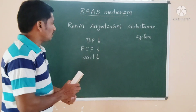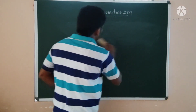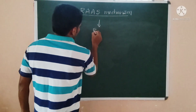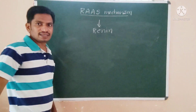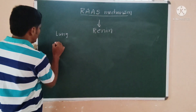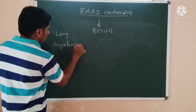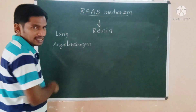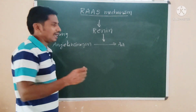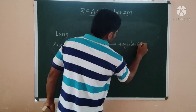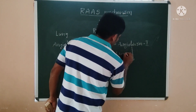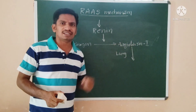Let me explain how the RAS mechanism works. In these three conditions, renin will be released into the blood. Renin acts on angiotensinogen — which is an inactive protein — and in the presence of renin, it is converted into angiotensin 1.